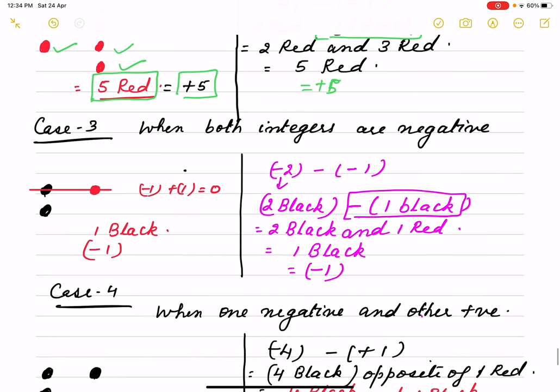Now case 3 we will take when both integers are negative. Minus 2 negative, minus 1 negative. That means what? 2 black. Here minus 1 is 1 black, opposite of black, means what? We will take 1 red. Now 2 black, 1 red, 1 black, 1 red will cancel. We are left with 1 black color, that is minus 1.